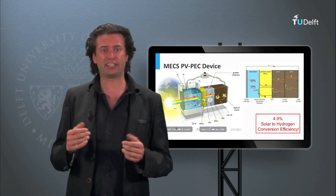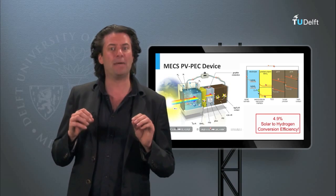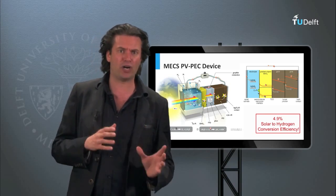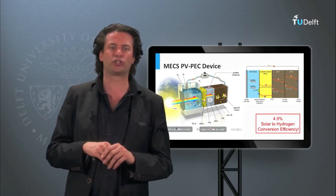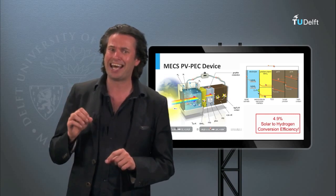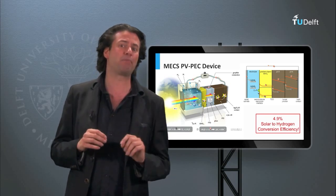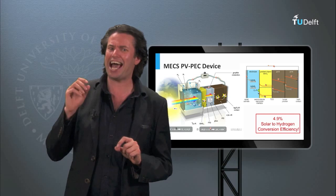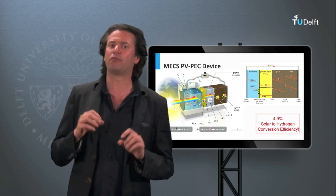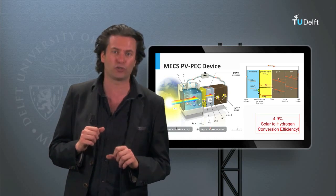Applying all those concepts, we, here at the Delft University of Technology, have developed a device made with a bismuth vanadate photoanode, combined with a double junction amorphous silicon solar cell, and a platinum cathode. This device has achieved a solar to hydrogen efficiency of 4.9%, which is actually the highest efficiency reported for such devices, based on a metal oxide photoanode.